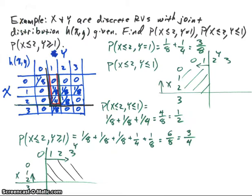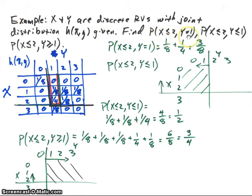Let's look at another example. In this case we already have the joint distribution function H of X, Y, written in blue. H of X, Y has Y values 0, 1, 2, 3 and X values 0, 1, 2, 3. We're asked to find: the probability that X is less than or equal to 2 and Y equals 1; the probability that X is less than or equal to 2 and Y is less than or equal to 1; and the probability that X is less than 2 and Y is greater than or equal to 1.